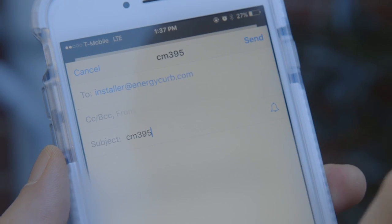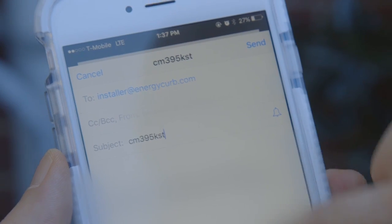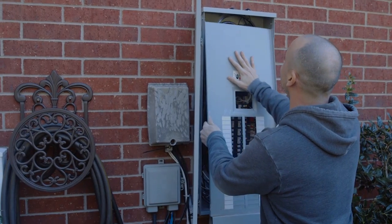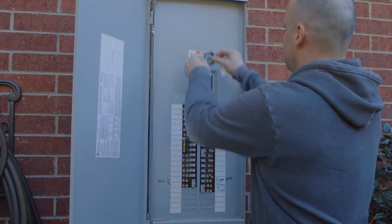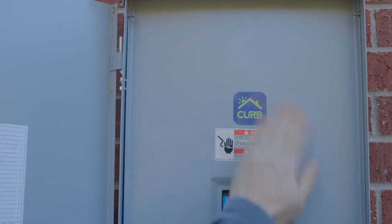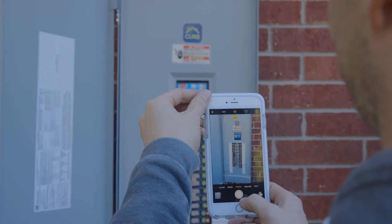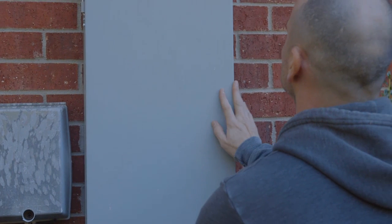Lastly, make it look like something you can take pride in. Add the Curb sticker to the panel cover, then send another high resolution photo of the closed panel with circuits and existing panel schedule.